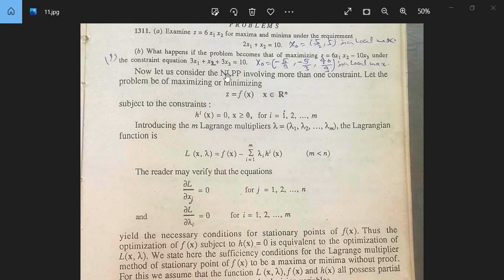Now let us consider the NLPP involving more than one constraint. Let the problem be of maximizing or minimizing Z equal to F(x), x belongs to R^n, subject to the constraints H_i(x) equal to 0, x greater than or equal to 0, for i equal to 1 to M. Means 1 to M constants.